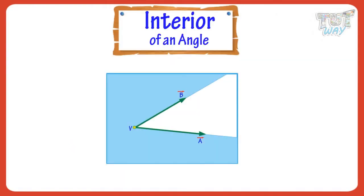It is the space between two straight lines. It extends even beyond the ends of the line segments. Here, the white area is the interior of an angle.